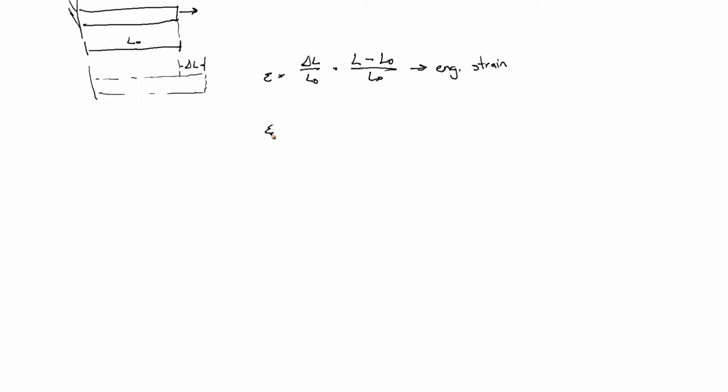There's other choices, though. So we could divide by the final length. You know, after the experiment's over. That's not as common, but sometimes we call this the Eulerian strain.